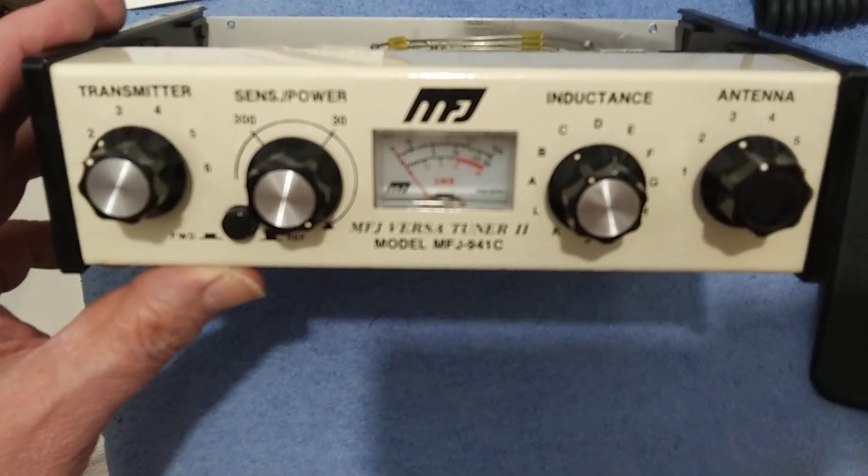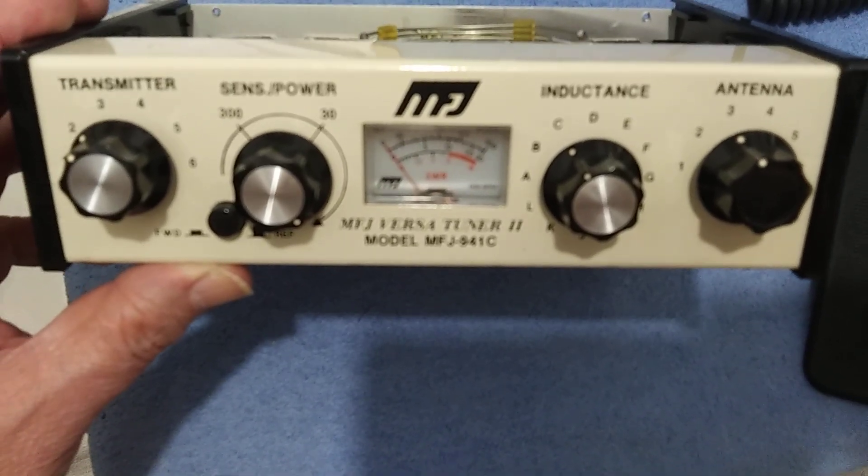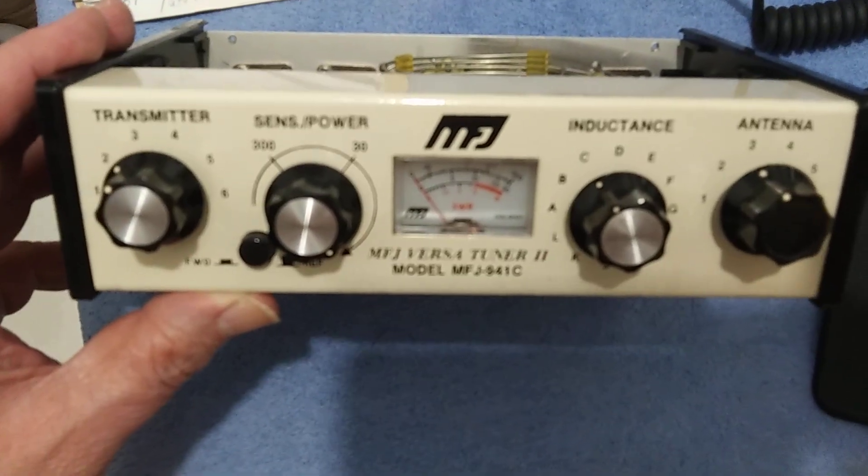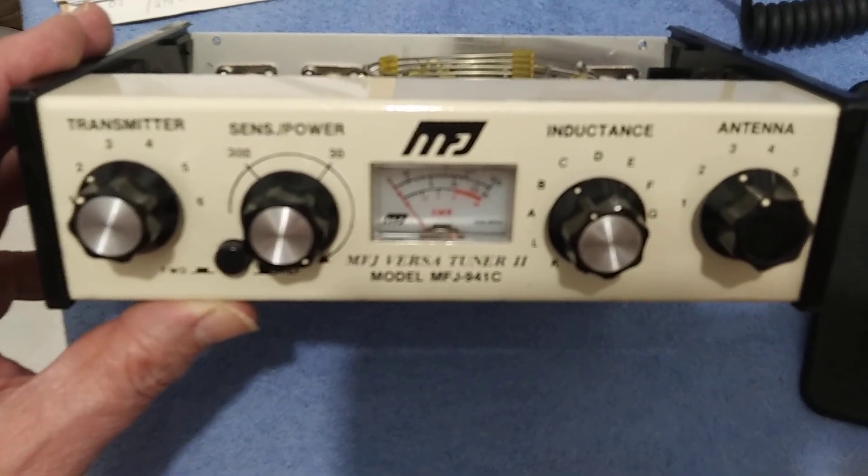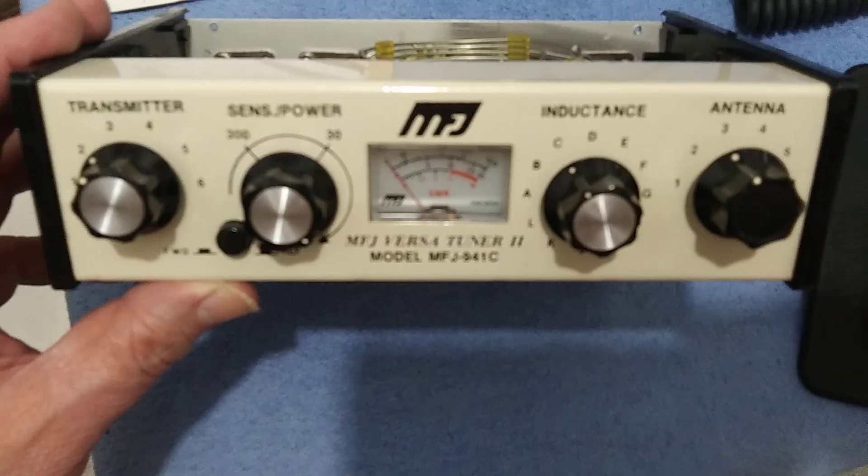One of the most common failures on any manual antenna tuner is blowing the diodes that are used for the SWR meter.